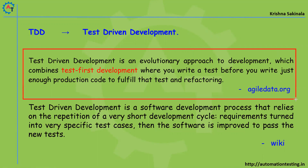Test driven development is an evolutionary approach to development — a software approach which combines test-first development, where you write a test before you write just enough production code. So you have just started writing code, or you have not even started writing code — first you try to test your code. It might fail or it might pass, but if you have not written enough code, then obviously it will fail.